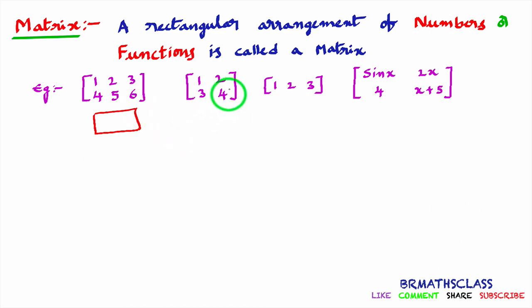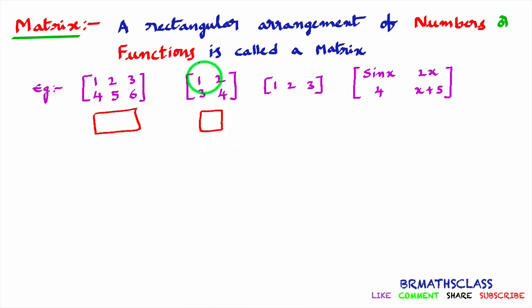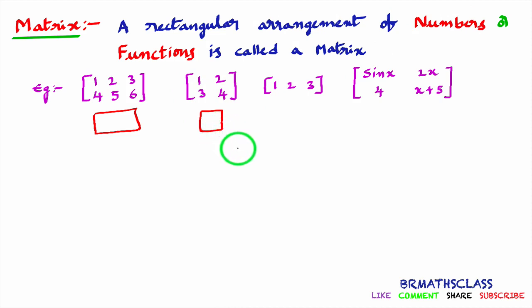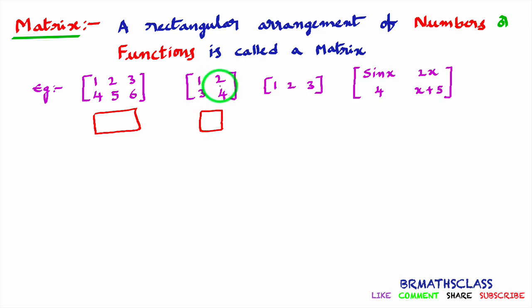Now you may be confused with this. Observe this matrix — is this a rectangle shape or a square shape? It is a square shape. Then how will it be a matrix? The definition says rectangular arrangement of numbers is called a matrix, but this is a square arrangement. Is it a matrix? Of course — because we know that every square is a rectangle. So whatever arrangement we have done here, that is a rectangular arrangement only. So yes, this is an example of a matrix.